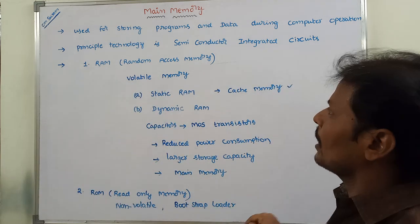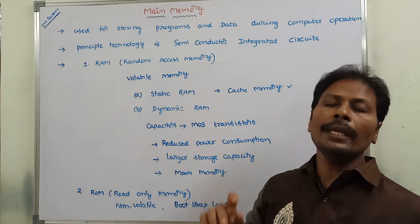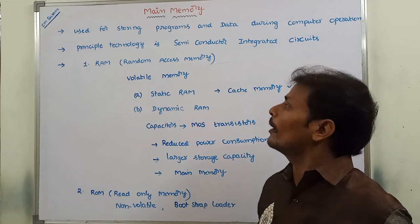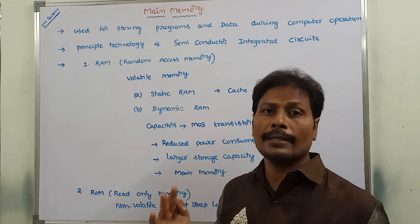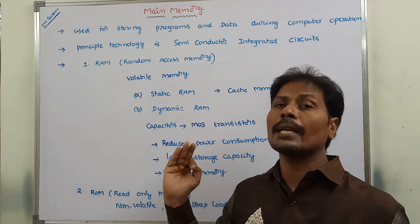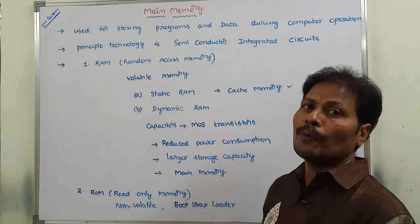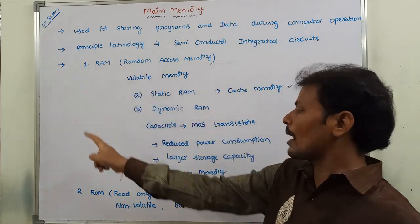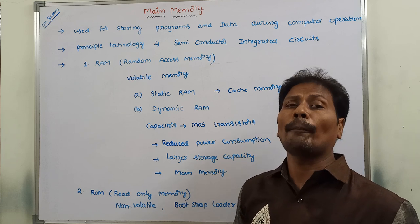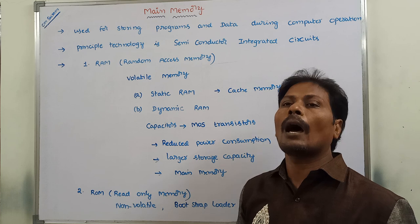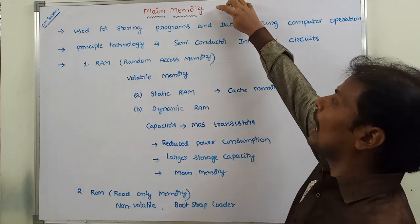This is the description and introduction to main memory. There are four parts in the main memory concept. First is introduction to main memory. Second is RAM and ROM chips. Third is memory address map. Fourth is how main memory is connected to the CPU. These four concepts come under main memory.